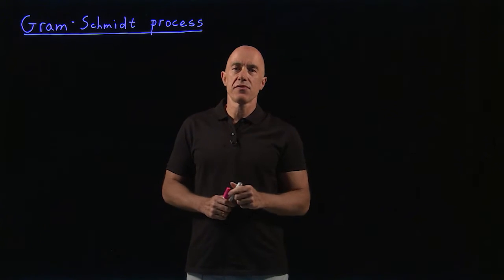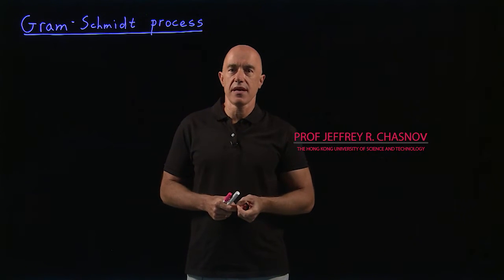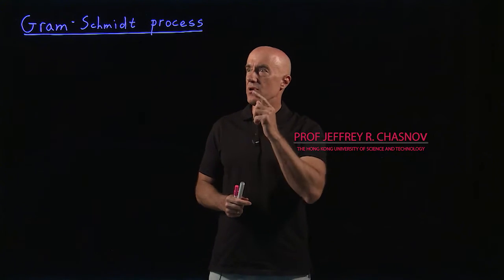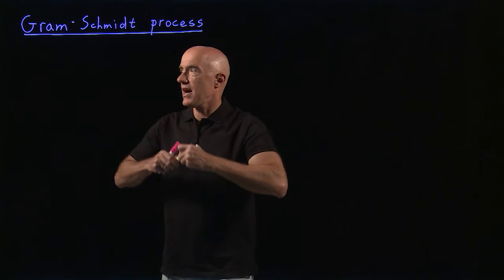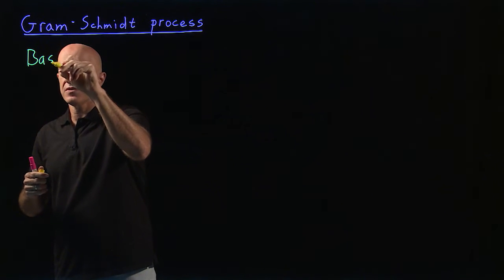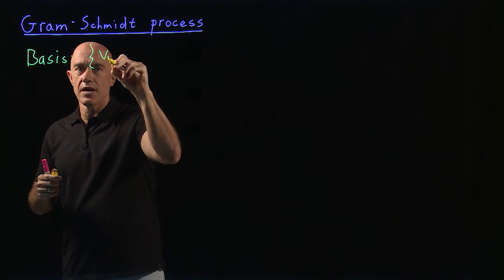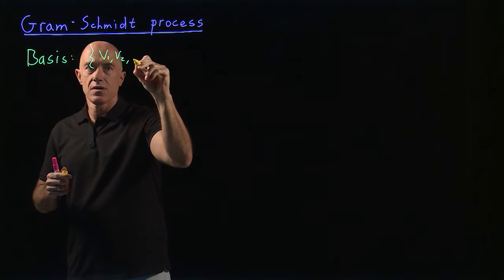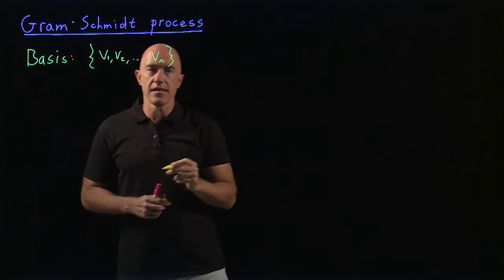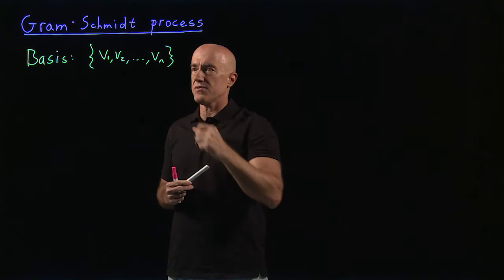In this video, I want to talk about an algorithm for constructing an orthonormal basis for a vector space. It's called the Gram-Schmidt process. So the idea is that we have a basis for some vector space. So let me denote it as v1, v2, through vn.